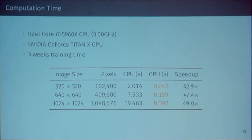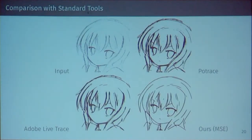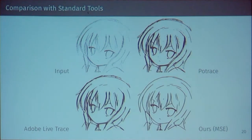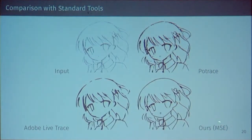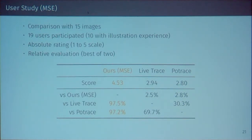These fully convolutional networks get roughly a 50x speed-up on GPUs. Comparing against standard tools — which are fairly simple, non-deep heuristic approaches — standard tools keep lots of noise, do not simplify lines, and can miss important lines, while our approach does a fairly good job at adjusting and combining them. These results are MSE only; I'll show results using the adversarial loss afterwards. As mentioned, you cannot use a validation loss, so the only way to evaluate is through user tests — time-consuming and expensive. Comparing against existing tools, we get roughly 100% user preference.